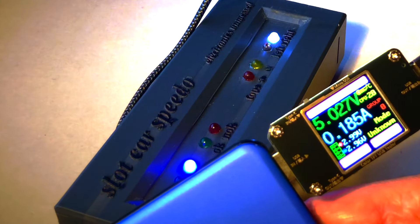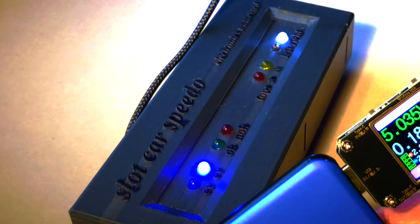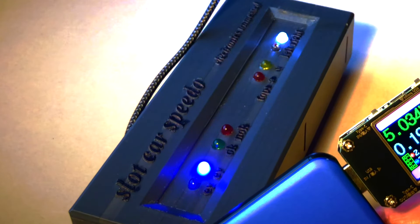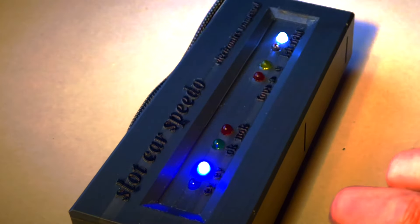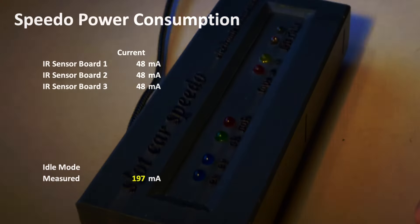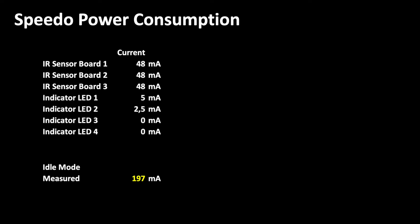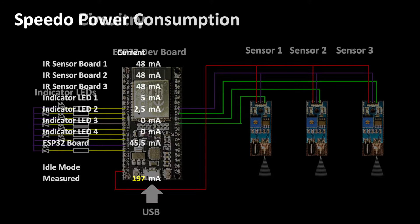Out of 8 LEDs, a maximum of 4 are lighting up at the same time. Currently, 1.5 LEDs are lit on average, so I calculate 5 mA for LED 1 and 2.5 mA for LED 2. The ESP32 board draws 45.5 mA, which is the measured total consumption minus the peripheral currents.